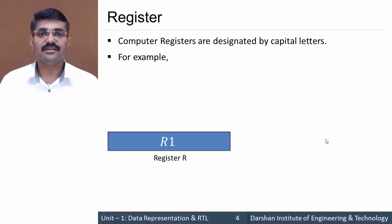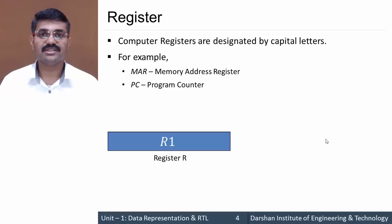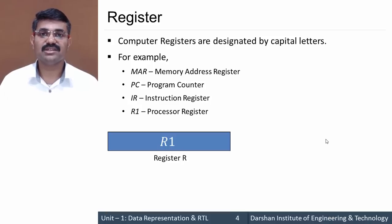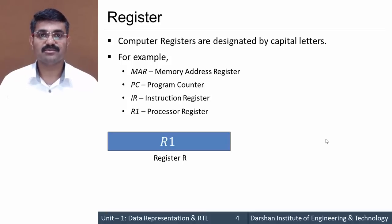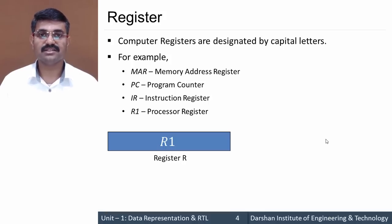We can have more than one register in our system, such as the memory address register, program counter, instruction register, and processor registers, which are denoted as R1, R2, or similar — but they must always be represented using capital letters.